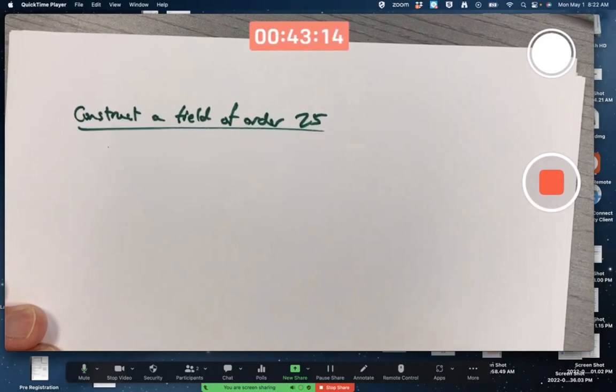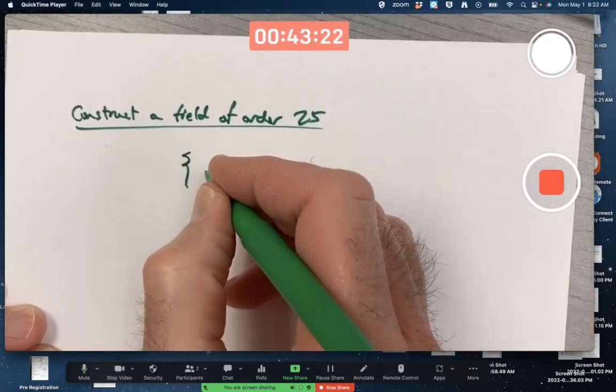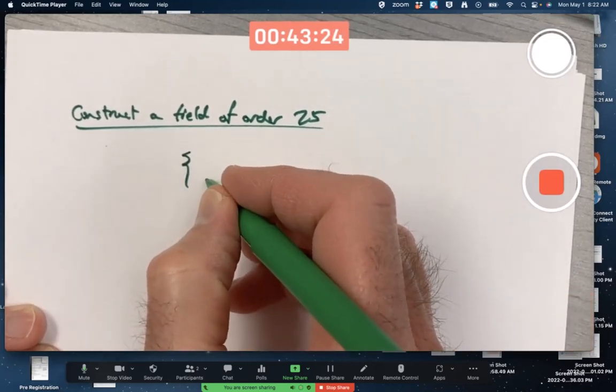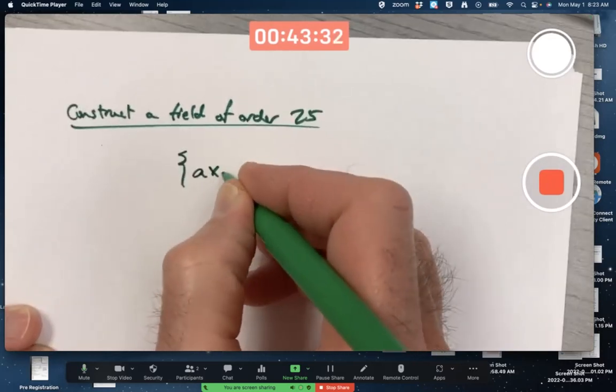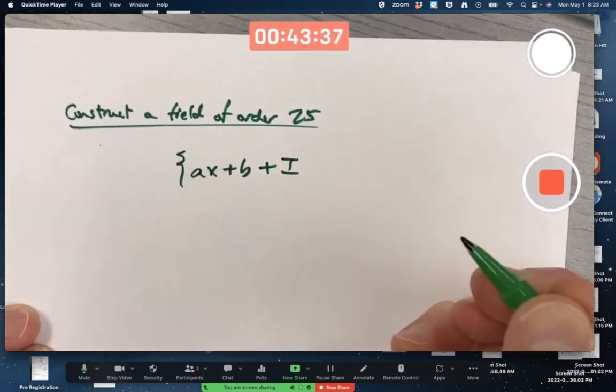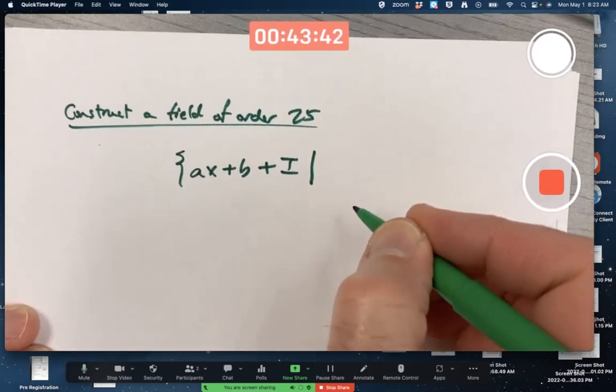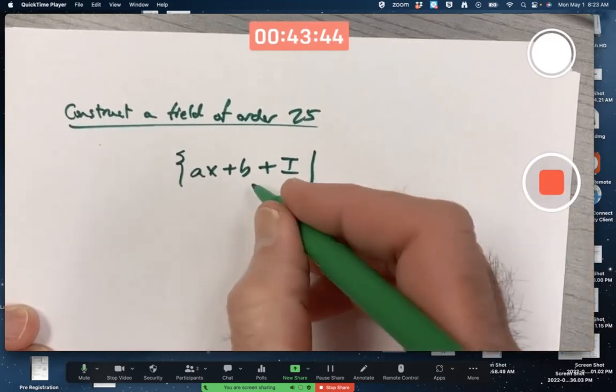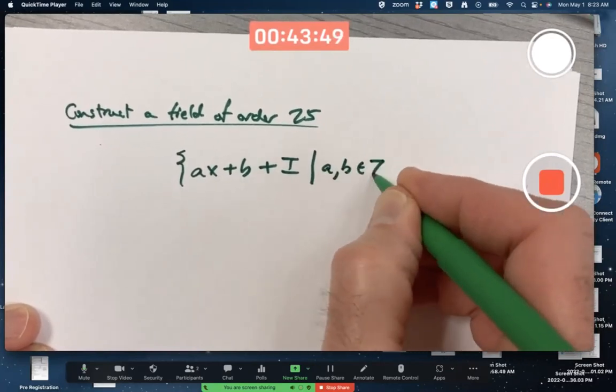We've already hinted at how to do this before. A factoring of the form, well, if it's going to have order 25, the representatives must be linear polynomials, AX plus B. It's going to be a factoring, so I'm going to add on some ideal where, again, if it's going to have order 25, you better have five choices for A and B. A and B must be from Z5.